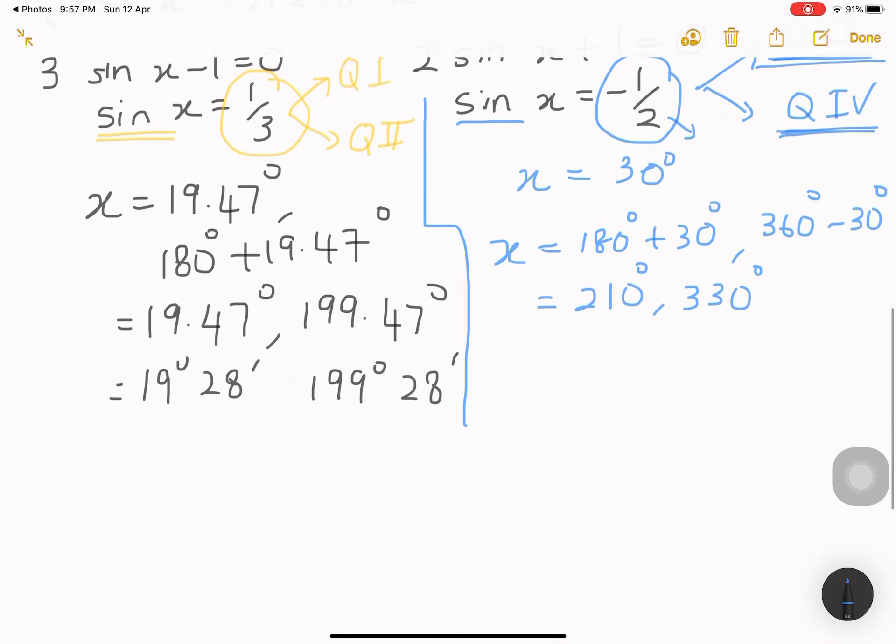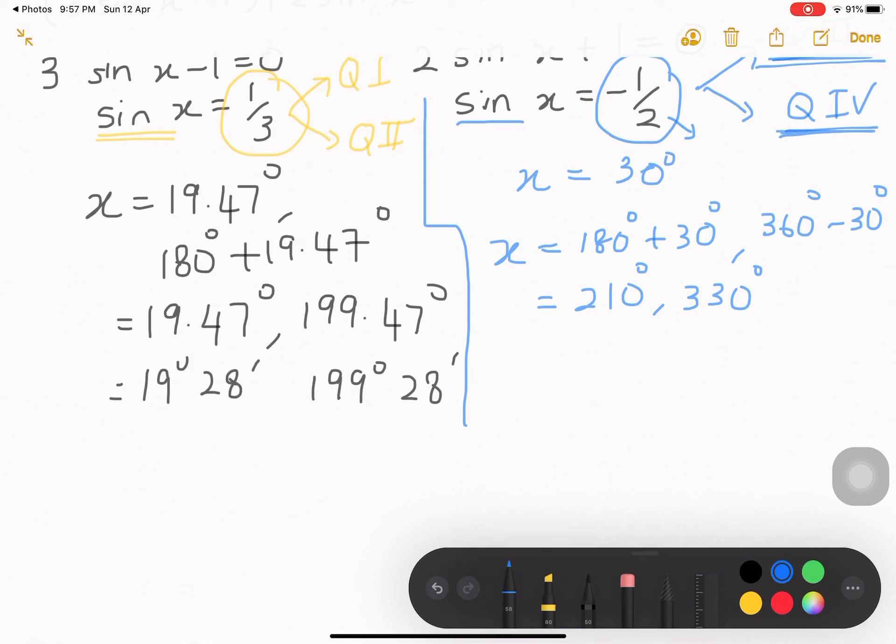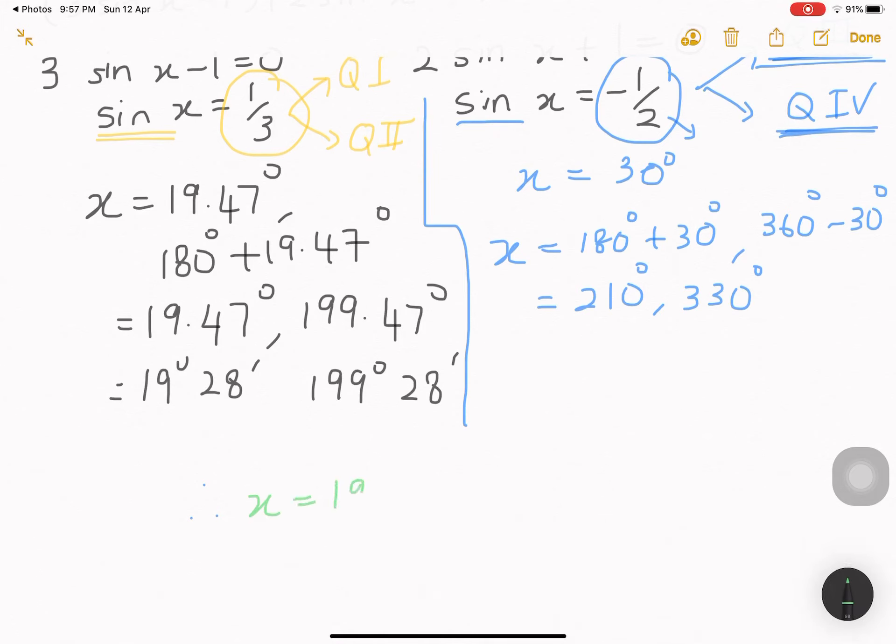To make a conclusion of what your x is, we can conclude that x is actually equals to 19.47 degree, 199.47 degree, 210 degree, and 330 degree. That's all. Thank you.